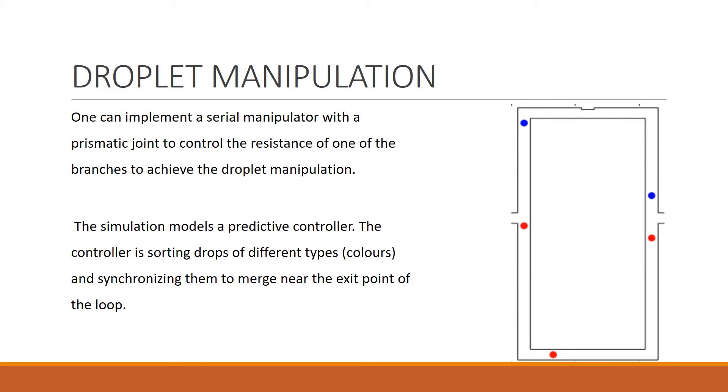As shown by the simulation model, one can easily manipulate drops in a microfluidic loop by using a serial manipulator. The serial manipulator can pinch the channel, decreasing its area and hence increasing the resistance of one of the branches. Thus, it can control the resistance of one of the branches and hence can affect the flow rates of the drops.